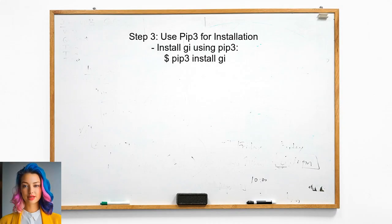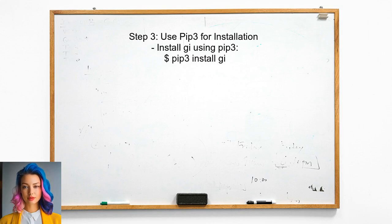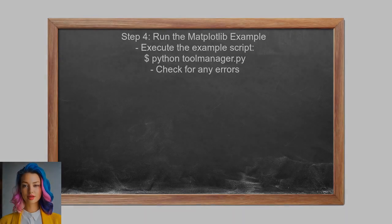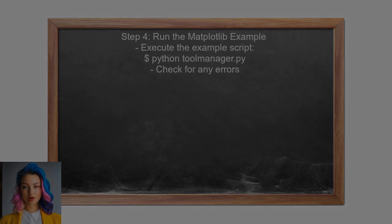If the user finds that pip is linked to Python 2, they should use the pip3 command instead. This command is specifically for installing packages for Python 3. After installing the GI package with pip3, the user should try running the matplotlib example again — this time it should work without the previous syntax error.